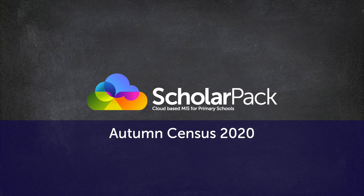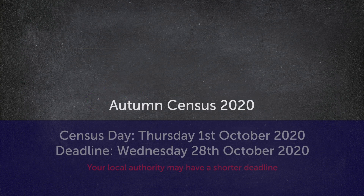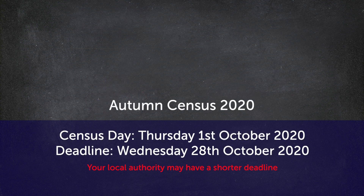Welcome to the Scolopac Autumn Census 2020 video. In this video we're going to look at how to complete the autumn census within Scolopac. The day of the autumn census is Thursday the 1st of October 2020. The deadline is Wednesday the 28th of October 2020; however, your local authority may have a shorter deadline.